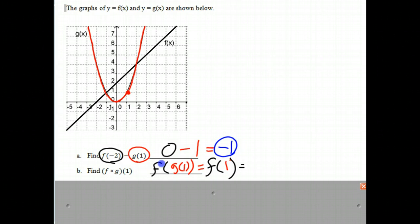And now we have to evaluate f(1). Well, where x is equal to 1, the f function, the black function, is right there at 3. So therefore, f(1) is equal to 3, and that is our answer.